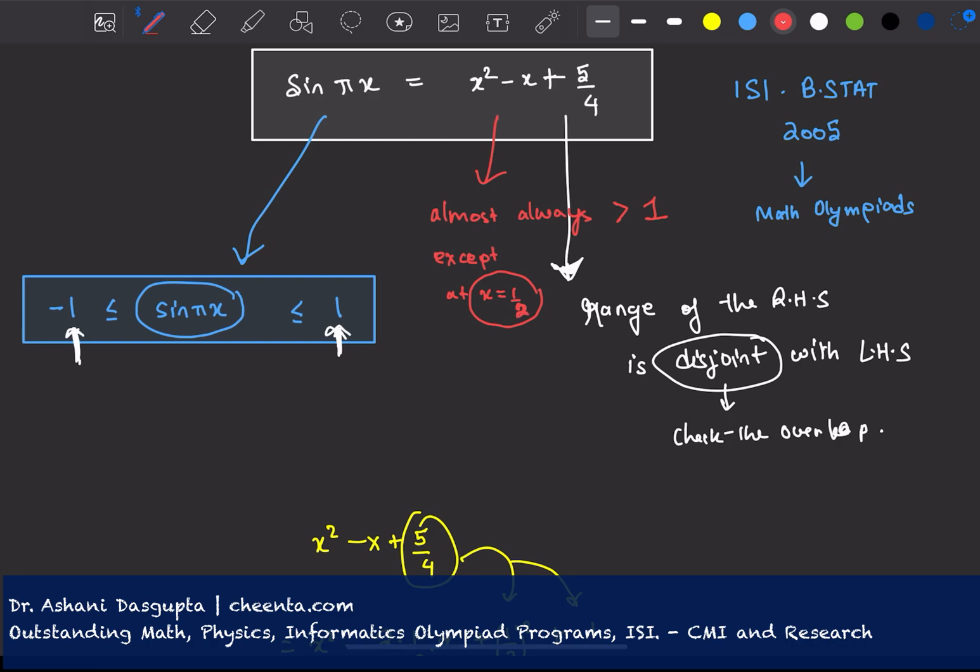So let's check what happens to sine pi x at x equals to half. So at x equals to half, we get sine of pi times half, which is sine pi by 2, which is 1. So indeed, the value of the left-hand side and the right-hand side are equal when x is equal to half. For all other values of x, the right-hand side is larger than 1 and this left-hand side is between minus 1 and plus 1. So the only possible solution is x equals to half.